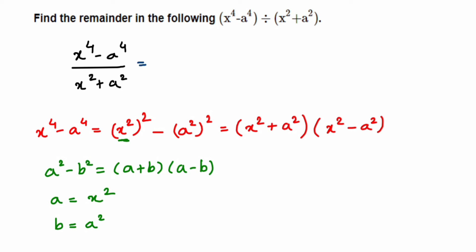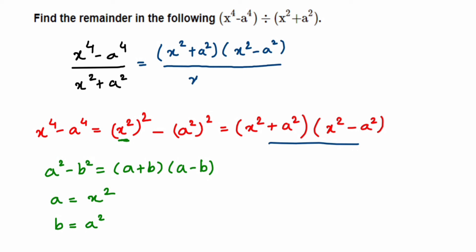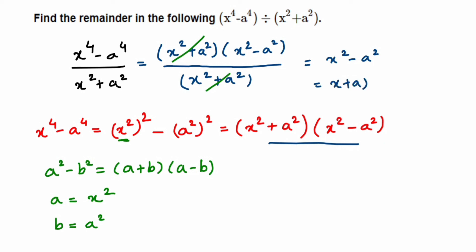In the numerator I write x squared plus a squared into x squared minus a squared, all divided by x squared plus a squared. Now we can cancel the common term — x squared plus a squared — from numerator and denominator. We are left with x squared minus a squared. That's the answer. We can factorize further: x squared minus a squared equals x plus a into x minus a.